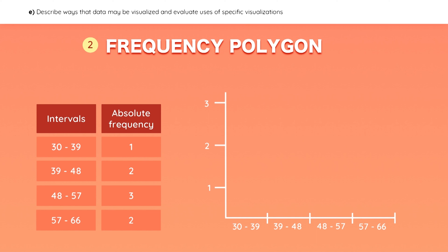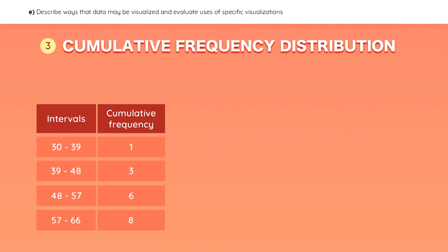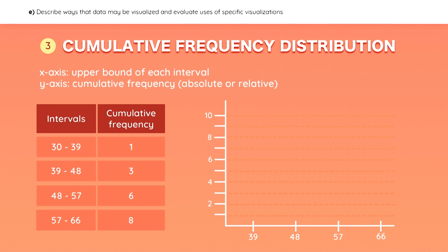Now let's create a frequency polygon. Just label the midpoint of each interval on the x-axis and keep the frequency on the y-axis. The first interval has one observation, the second has two, and so on. Connect the midpoints to create the frequency polygon. To create a cumulative distribution chart, place the upper limit of the interval on the x-axis and the cumulative frequency on the y-axis, then plot each cumulative frequency on the graph. You can quickly see that there are six observations below 57 degrees.